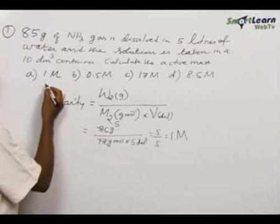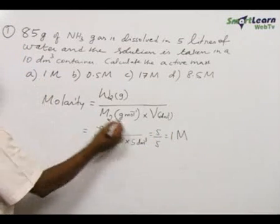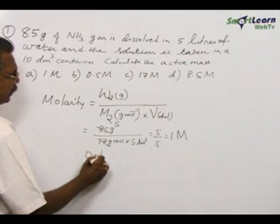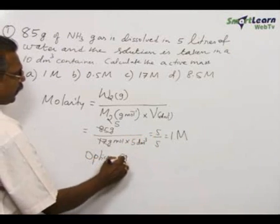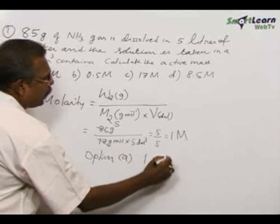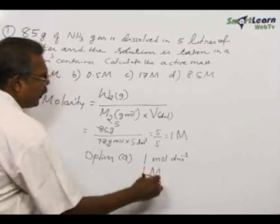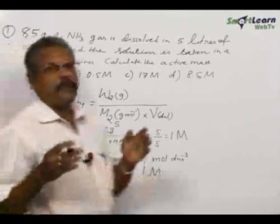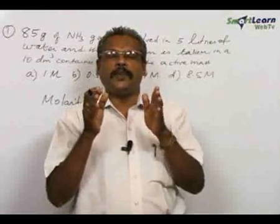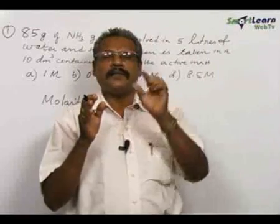The answer is 1 mole per liter, or 1 M, so you have to select option A. In 1 M, there is 1 mole per 1000 mL. Go for option A.